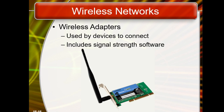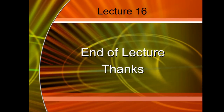When we have wireless signals, we receive those signals and provide wireless network connectivity. Devices use wireless network cards including signal strength software to connect to the wireless network. Signal strength software shows which wireless network you are connected to.